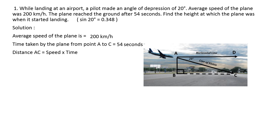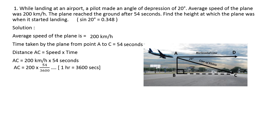Now we find the distance travelled by the aeroplane — that is, the length of side AC. Using the formula: distance = speed × time, we get 200 × 54 seconds. Converting 54 seconds into hours by dividing by 3600, we simplify to get 54/18, so AC = 3 km. Therefore the distance travelled by the plane from A to C is 3 km.